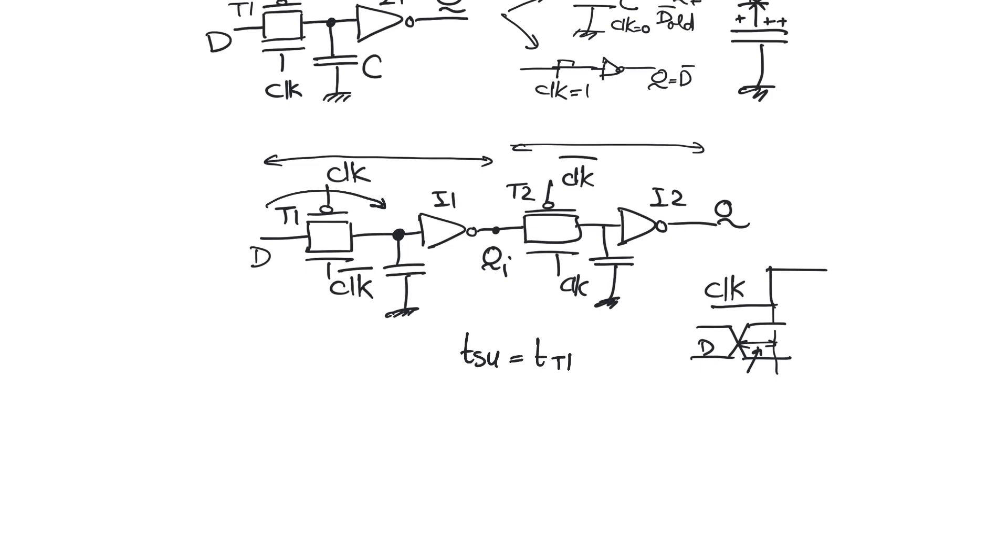Now what is t-c-q? If we obey t-setup then data is stable at the input of inverter 1 when the active edge comes. As soon as the active edge comes and we go to the one phase of the clock, how long does it take for data to appear on Q?